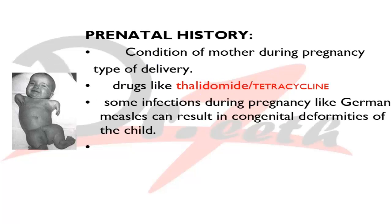For prenatal history, you ask the mother — not the patient — about conditions during pregnancy: whether she had good nutrition, whether it was a premature delivery, and what type of delivery. Premature babies usually have some abnormalities. If it was a forceps delivery, the child can have TMJ disturbances, mandibular hypoplasia, and possibly hearing defects because the forceps beaks can pass over the developing mastoid process and cause injury.